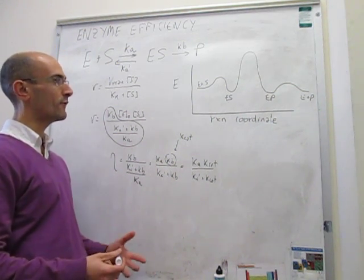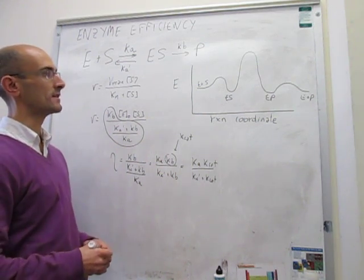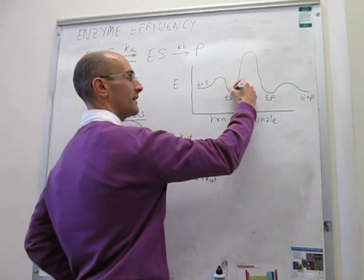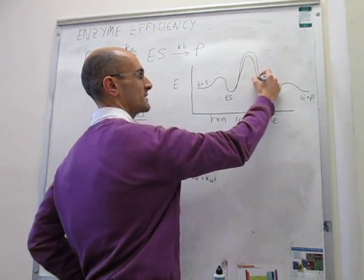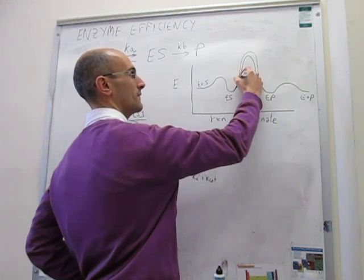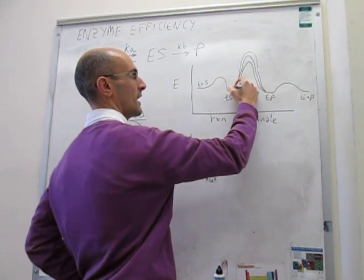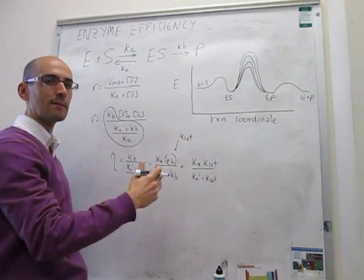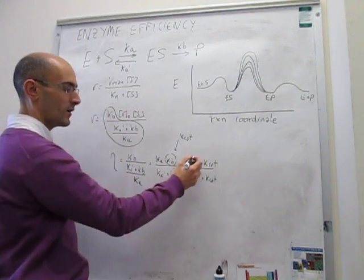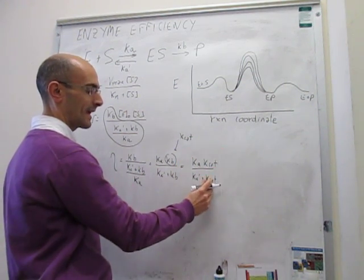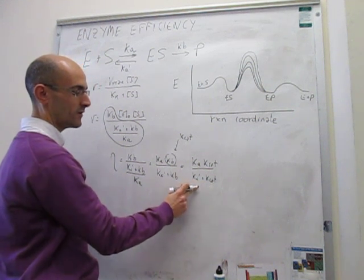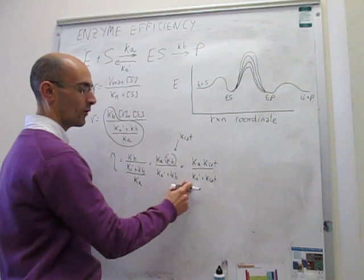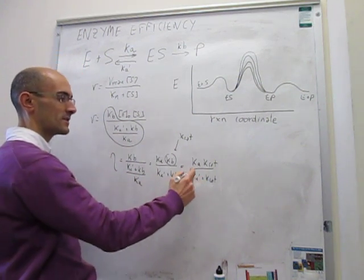So imagine that an enzyme has evolved over the years, has been refining the reaction mechanism, so that this barrier, via evolution, becomes smaller and smaller. So if the enzyme evolves to actually make this barrier smaller and smaller, what happens is that the catalytic constant becomes larger and larger. And eventually, you're actually going to hit a limit here, when this k cat is very large, where in the denominator, you're going to be able to neglect k a prime with respect to k cat, if this k cat is very large.